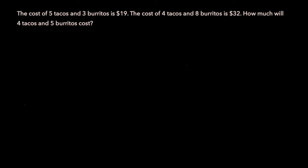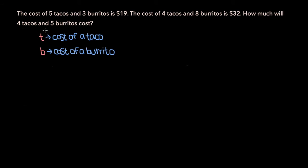Okay, so here we have our second problem. The cost of 5 tacos and 3 burritos is $19, and the cost of 4 tacos and 8 burritos is $32. How much will 4 tacos and 5 burritos cost? Let's assign variables to the quantities we want to solve for. Let's say T is the cost of a taco, and that B is the cost of a burrito. We have two variables, so we're going to need two equations.